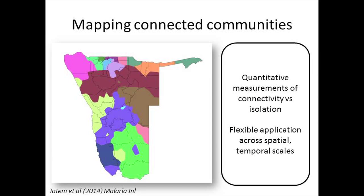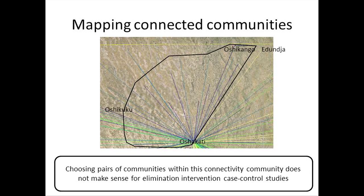We can do this across countries at different spatial and temporal scales. Using network clustering methods on Namibia's movement data, areas of the same color have more movement between them than to neighboring areas, identifying which areas could collaborate, which are more connected, and which are more isolated. This defines communities for that Northern Namibia example where choosing pairs within the same strongly connected community doesn't make sense for controlled comparisons.